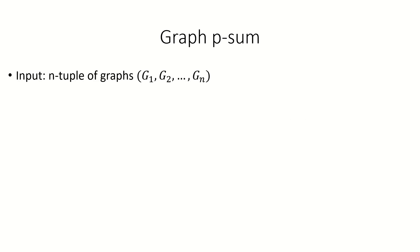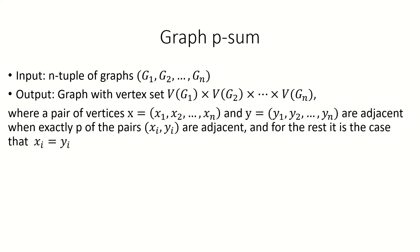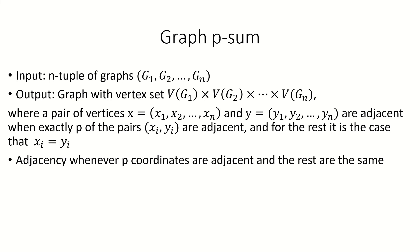To begin, the p-sum of graphs is a graph operation that takes as its input an ordered list of n graphs and outputs a graph with vertex set equal to the Cartesian product of the vertex sets of the n input graphs in the order in which they were given. In the output graph, two vertices are adjacent when exactly p of the pairs x_i, y_i are adjacent vertices, and for the rest of the n minus p pairs of that form, x_i is the same vertex as y_i. In other words, a pair of vertices is adjacent when exactly p of their coordinates are adjacent and the rest of their coordinates are the same.